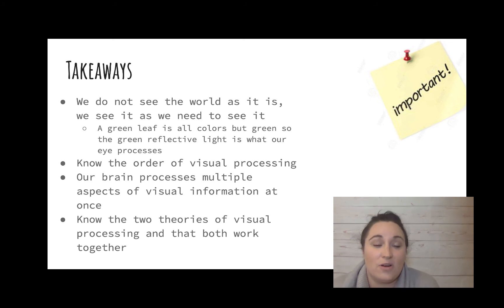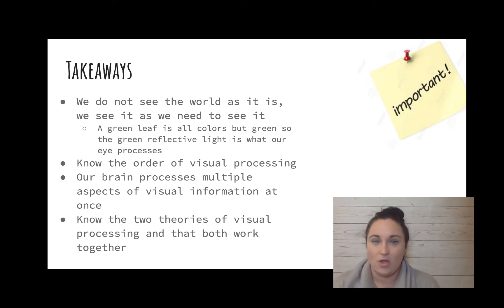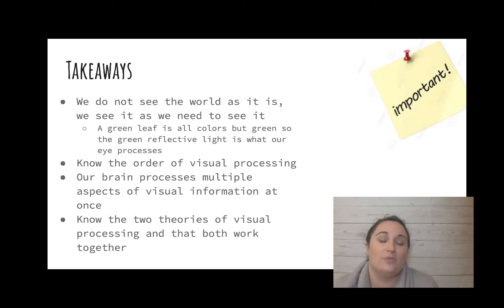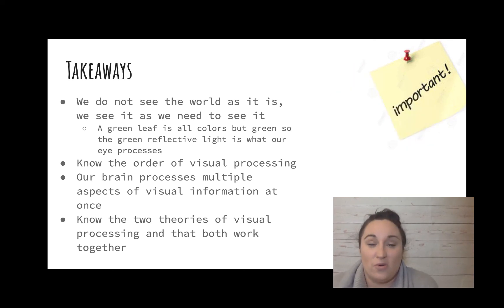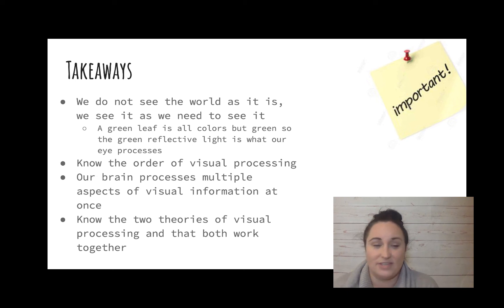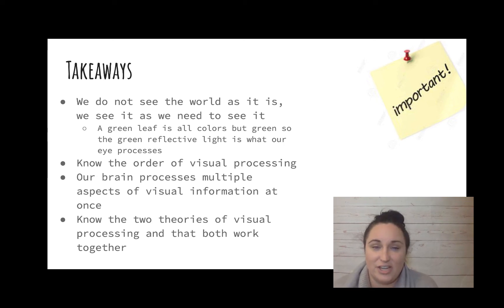Key takeaways: we do not see the world as it is — we see it as we need to see it. A green leaf isn't actually green; we see green because it's the only color bouncing back off the leaf while all other colors are absorbed. You should know the order of visual processing, that our brain processes multiple aspects of vision at once through parallel processing, and know both color theories and how they work together. That sums up mod 18 on vision.